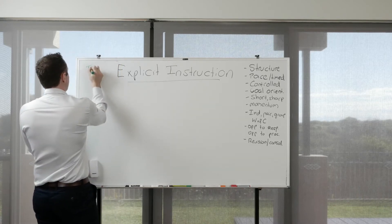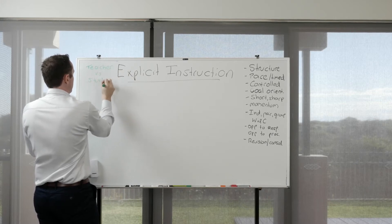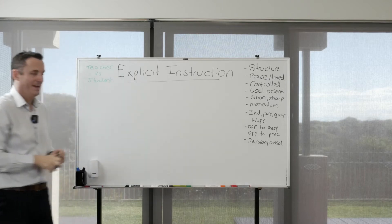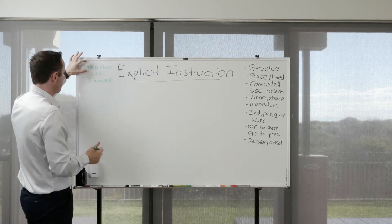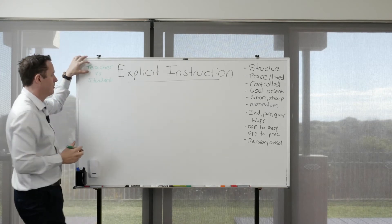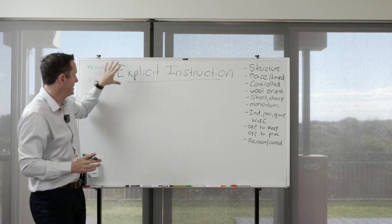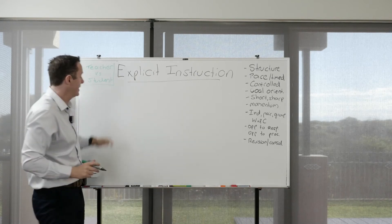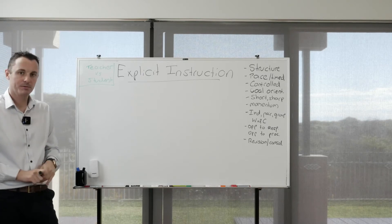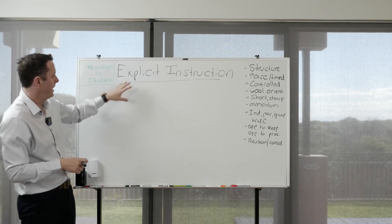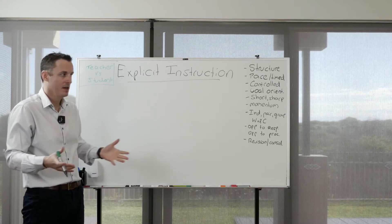There are two types of strategies: teacher-centred and student-centred. Explicit instruction is very teacher-centred and is used by many teachers in primary schools, high schools, and adult training sectors, particularly when there are large numbers of students and content to get through at a relatively fast pace.